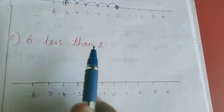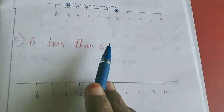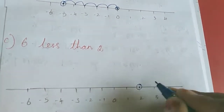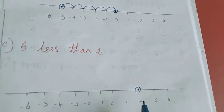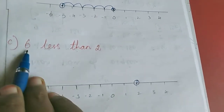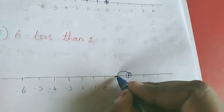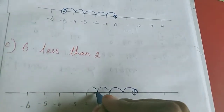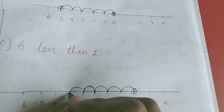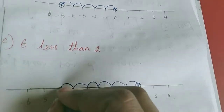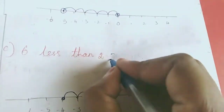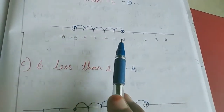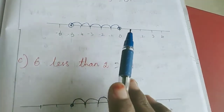Sum C: 6 less than 2. This is also in sentence form, so we mark the second number — second number is 2, I marked it. Less than means we want to move to the left side. How many steps? 6 steps. So: 1, 2, 3, 4, 5, 6. I moved 6 steps and I reached minus 4, so the answer is minus 4.